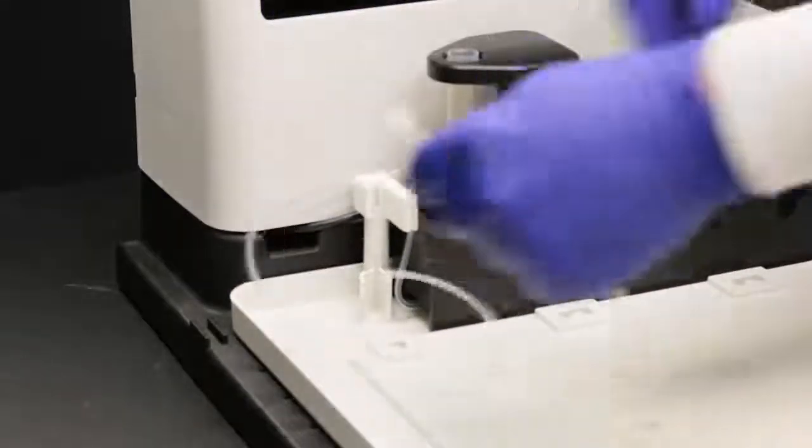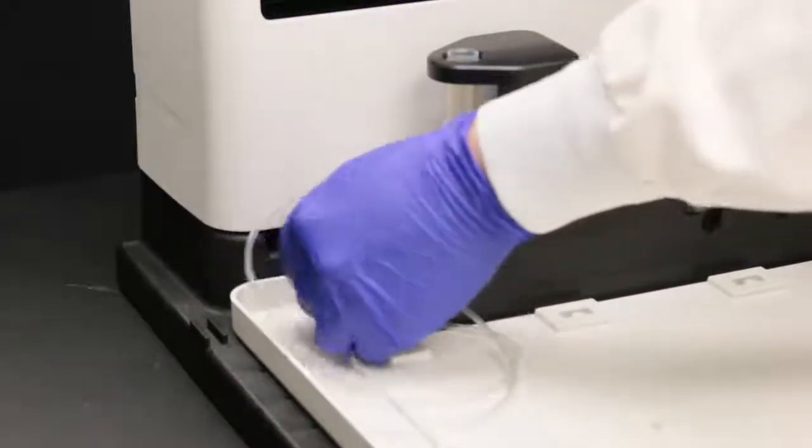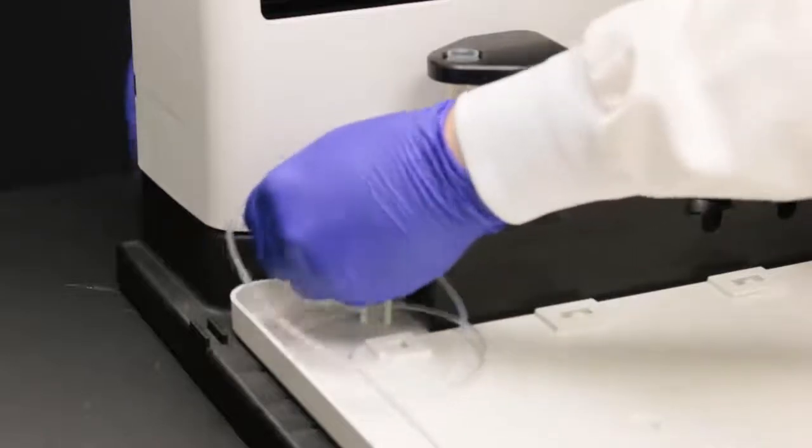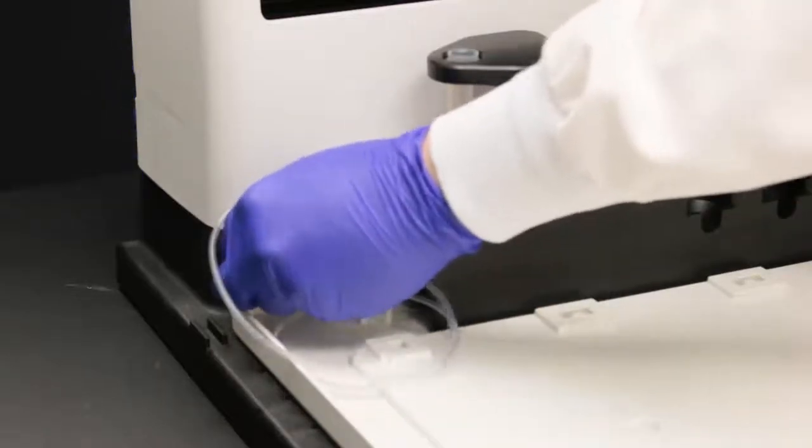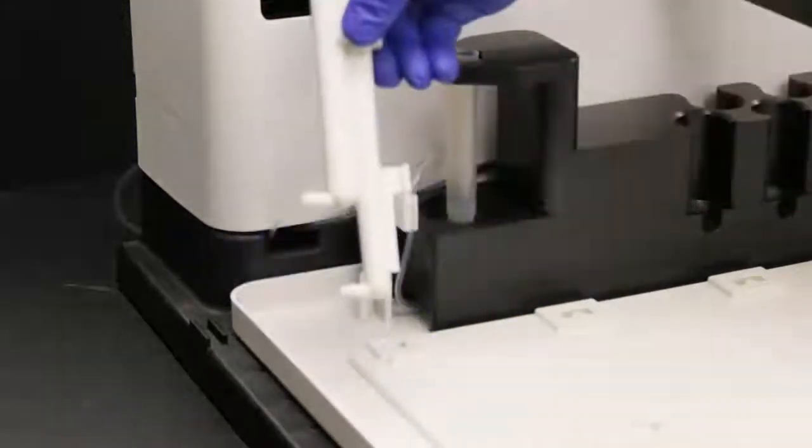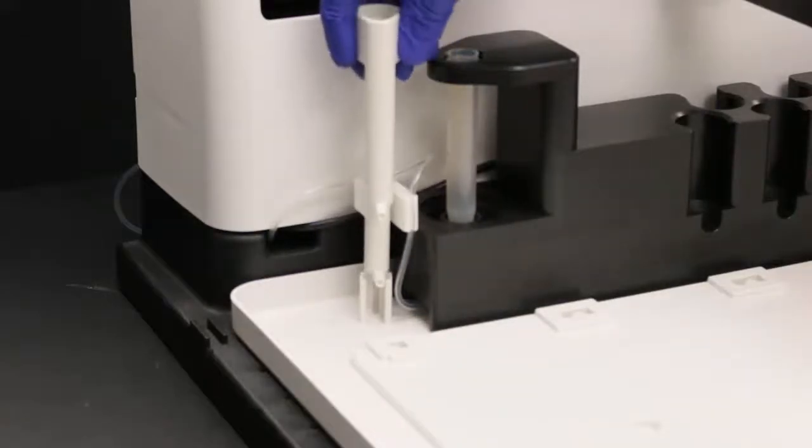Thread the tubing through the hole in the base of the auto sampler. Install the auto sampler rinse station by pressing it straight down.